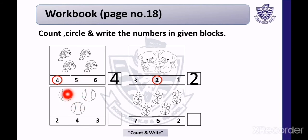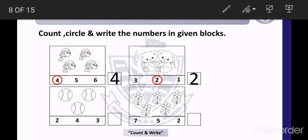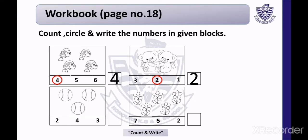Next box — this is a picture of balls. Count with me — 1, 2, 3. There are 3 balls. Look at the first number — it is 2, not 3. Next number 4 — is it 3? No. And the next number — is it 3? Yes. Circle this number and write it in the given block.